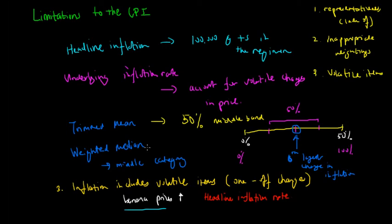We know there are now four types of inflation, rates of inflation that can be recorded. The headline inflation, which includes everything in the regiment, the underlying inflation rate, which doesn't include the volatile changes in prices. The trimmed mean, which only includes the 50% band and the weighted median, which only includes the middle category or the median category. This is how the CPI actually can take into account different changes in inflation rates to make it more representative of the actual effect on our purchasing power.